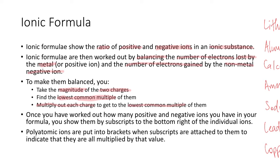Once you've worked out how many positive and negative ions you have, you can show them by subscripts on the bottom right of each individual ion. And if you have a polyatomic ion — which is an ion made up of more than one atom — you put brackets around it so that the subscript multiplies all values inside those brackets.